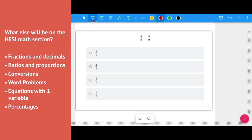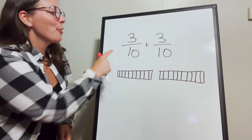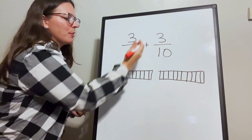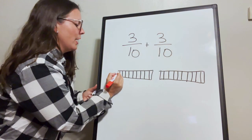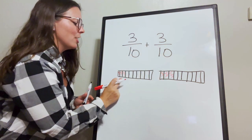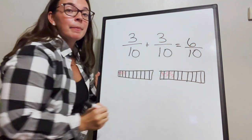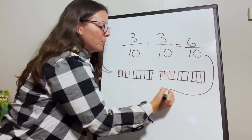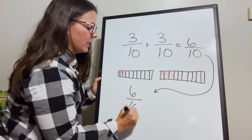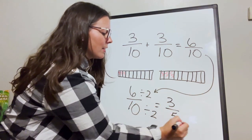Let's look at practice examples like you will see on the HESI exam. Two-ninths plus five-ninths: same denominator, add the top and keep the bottom — seven-ninths. Can't simplify, so that's the final answer. Three-tenths plus three-tenths: same denominator, three plus three is six, so six-tenths. We need to simplify — both are even, divide by two on top and bottom — giving three-fifths as the final answer.